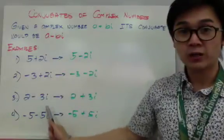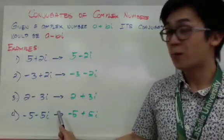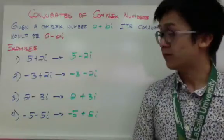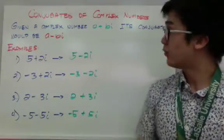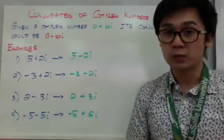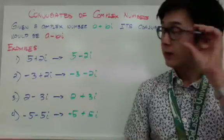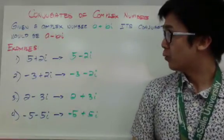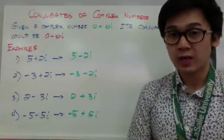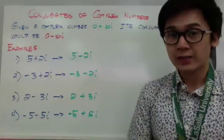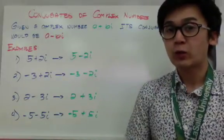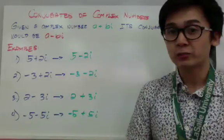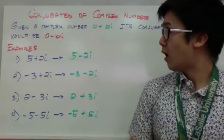The imaginary part of your complex number will change from positive to negative and from negative to positive — and that's how you find the conjugate of a complex number. Conjugates of complex numbers are what we use in rationalizing rational expressions, and we're going to find out what those mathematical terms are in the next example.